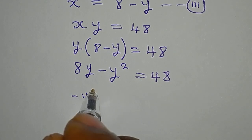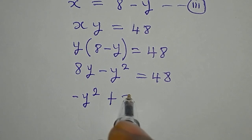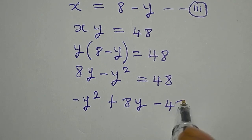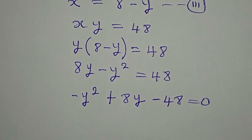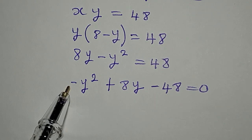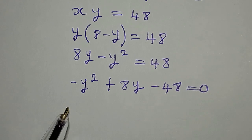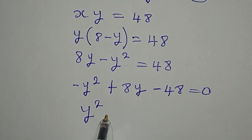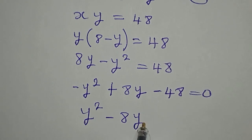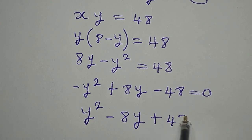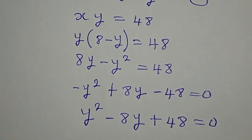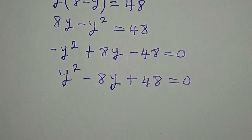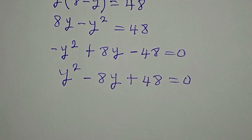Rearranging: minus y squared plus 8y minus 48 equals 0. To remove the negative leading term, we multiply everything by negative 1, giving us y squared minus 8y plus 48 equals 0. Remember there's no point writing negative zero or positive zero.